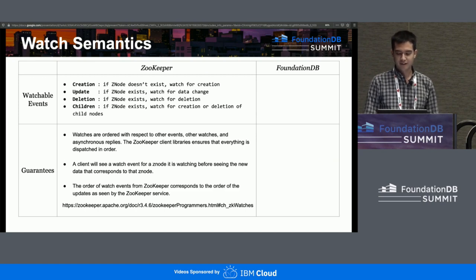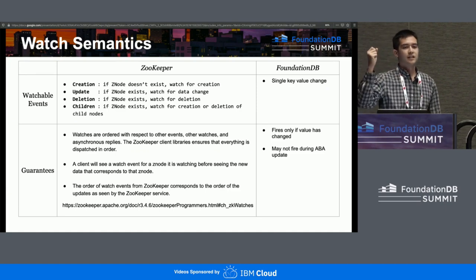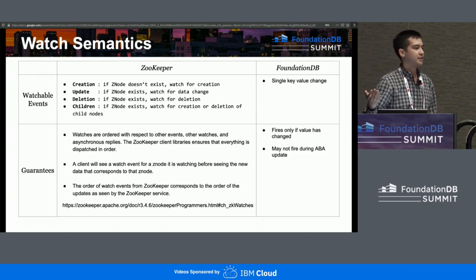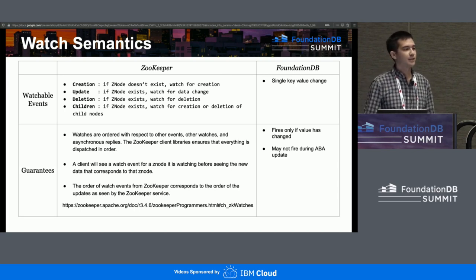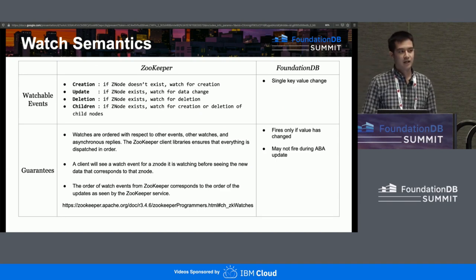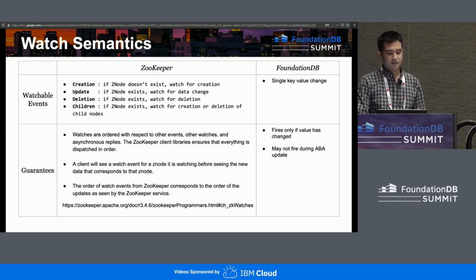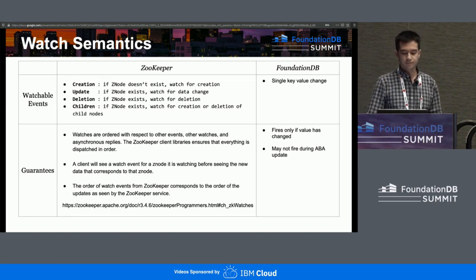In contrast, FoundationDB also has a feature called a watch. The way it works is: for a given key, give me back a future that completes if the value has changed. We don't know if it was created, deleted, or updated. There are no ordering guarantees — no guarantees of exactly when it fires relative to other things. It's even possible it doesn't fire if you were watching value A, it goes to B, and then immediately flips back to A. So we're going to have to do a lot of work at the layer level to recreate the exact semantics of Zookeeper's watches.